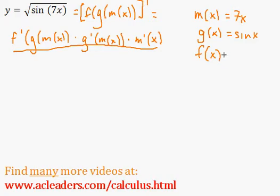But, in this case, m of x is just going to be the inside function, which is just 7x. g of x would be sine of x, just this middle function right here. And the outside function would be f of x is root of x.